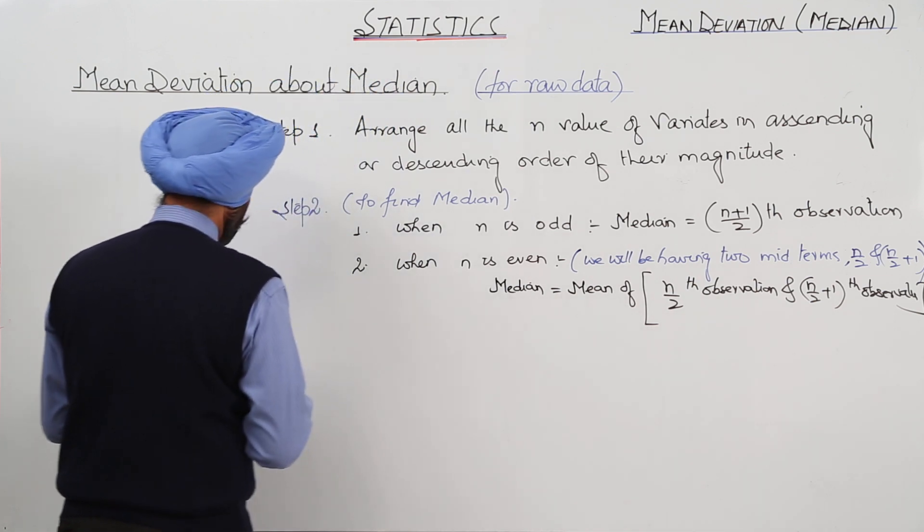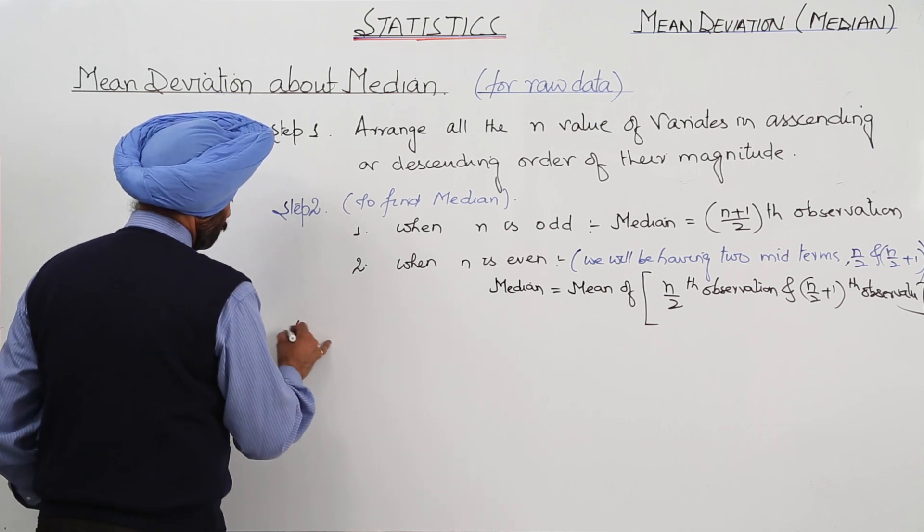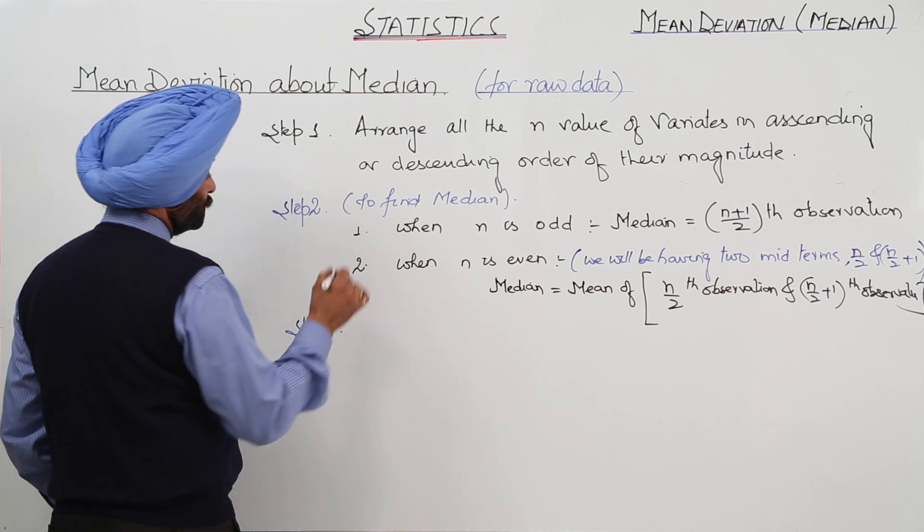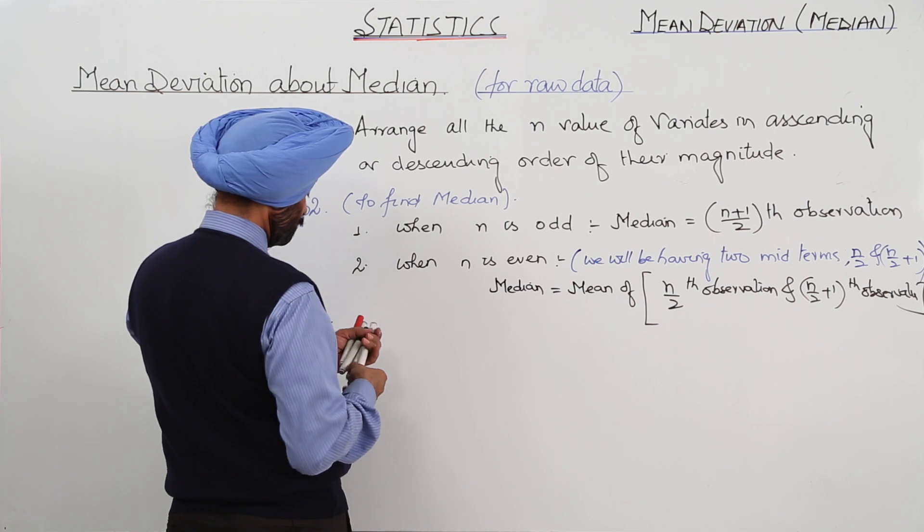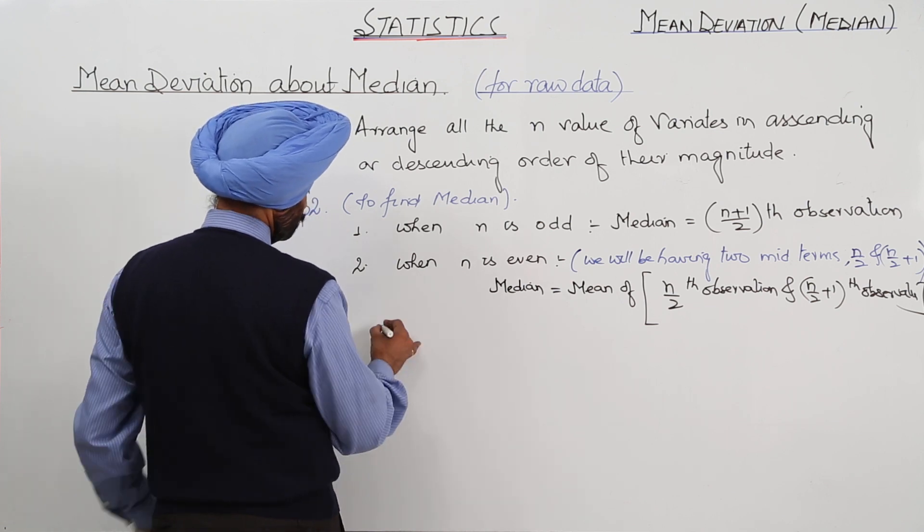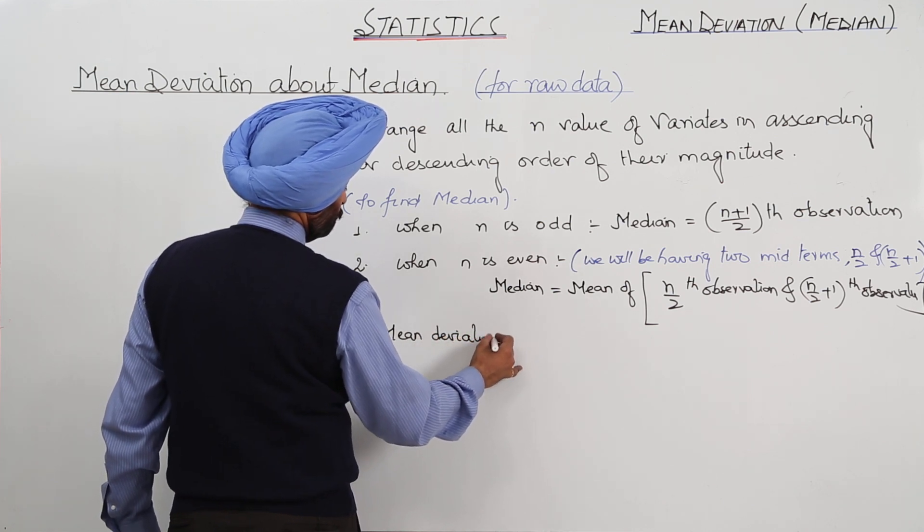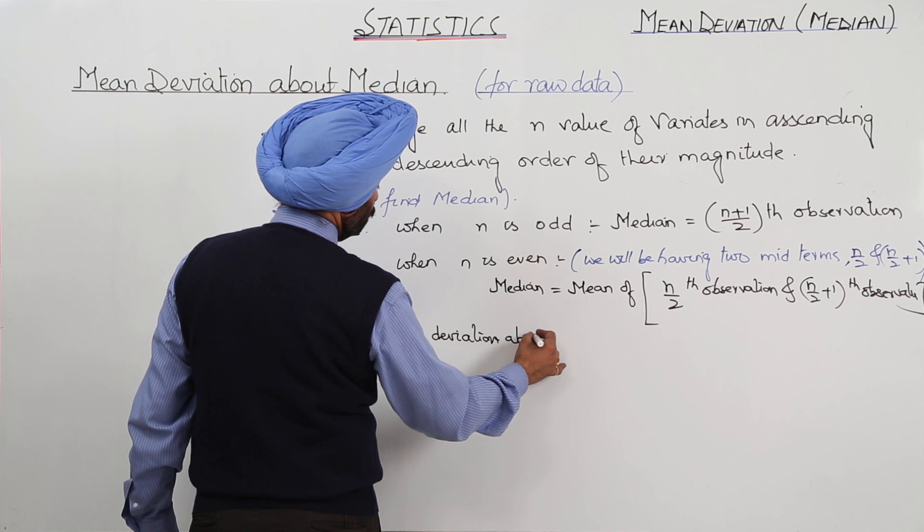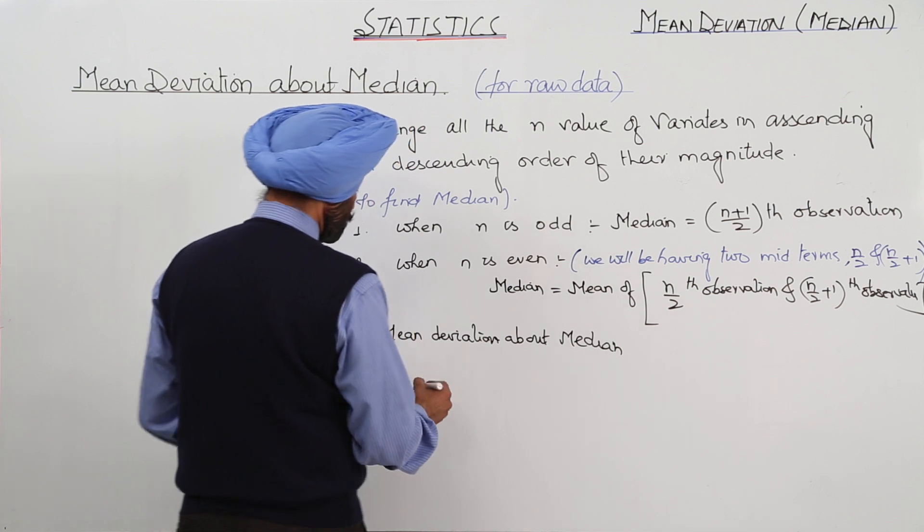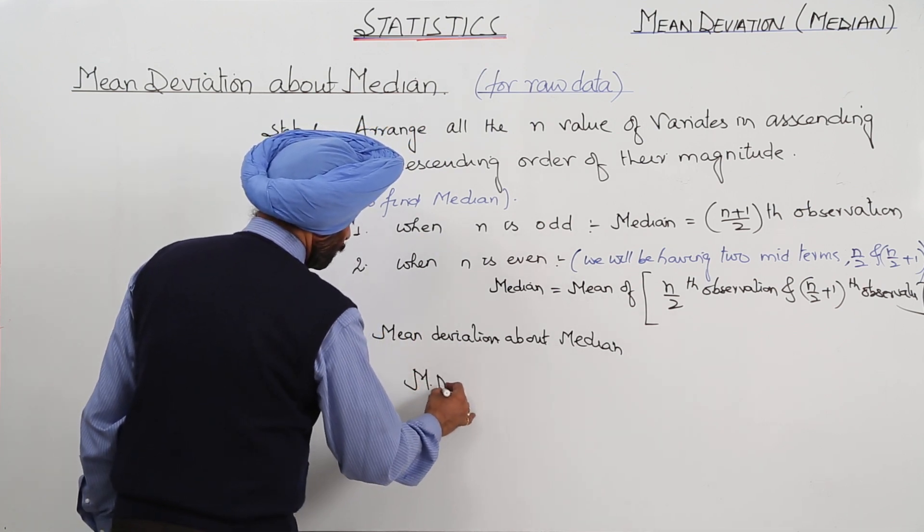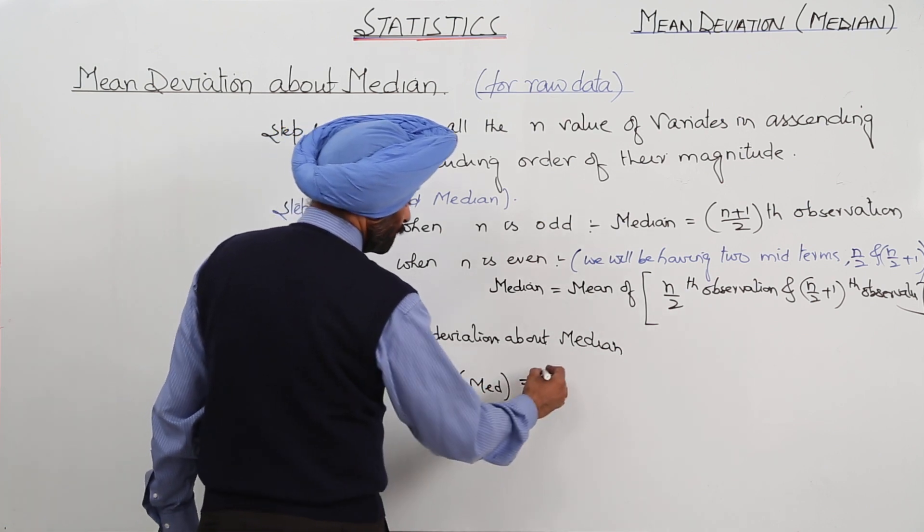Step 3. Step 3 is what? Step 3 is mean deviation. Mean deviation about median. How to calculate? This is mean deviation about median. It will be written like this.